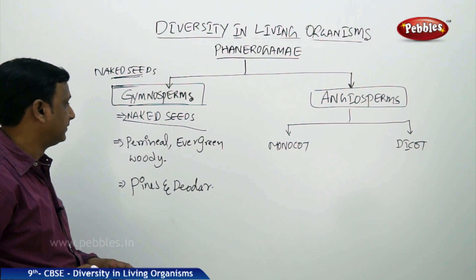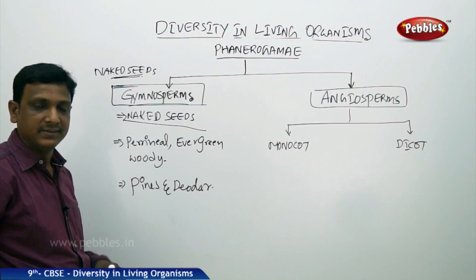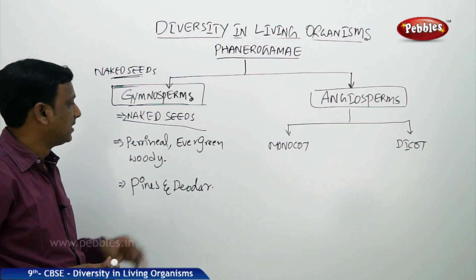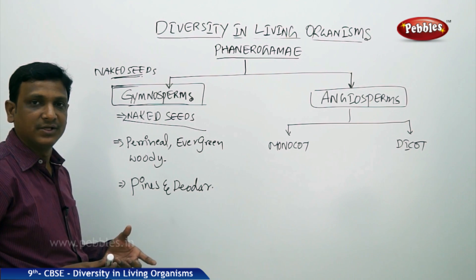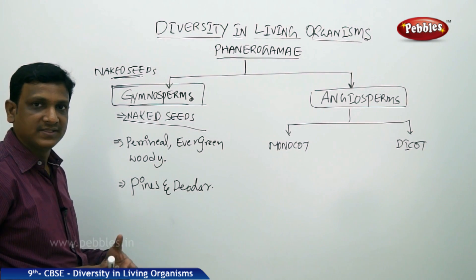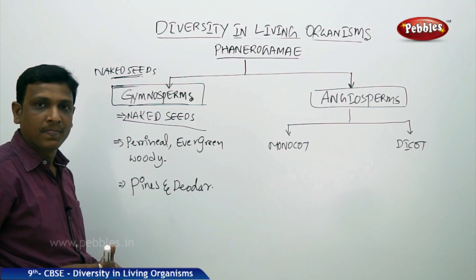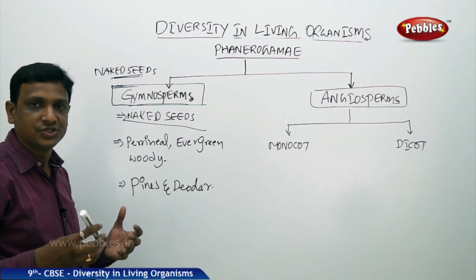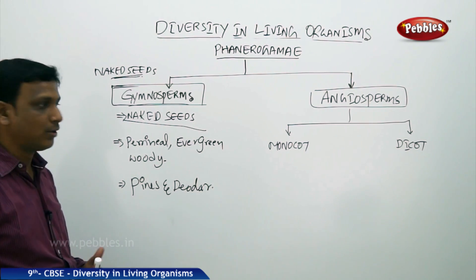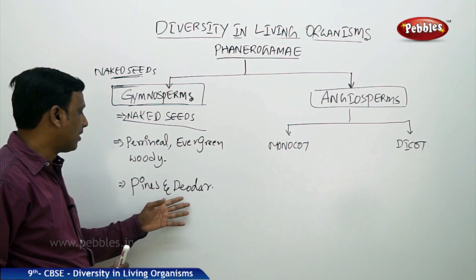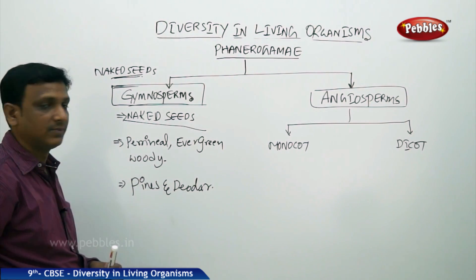These gymnosperm plants grow into big trees. They are perennial — they live for a number of years. They are evergreen, meaning they do not shed their leaves. They are also woody, with trunks that are very woody and used as wood for furniture. Examples of gymnosperms are deodar and pine.